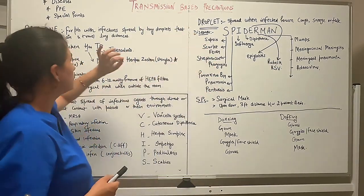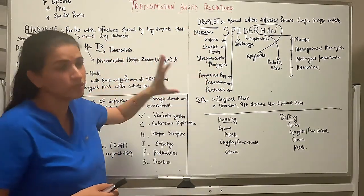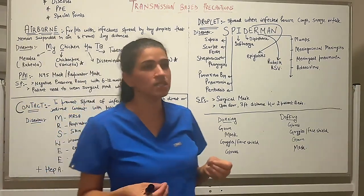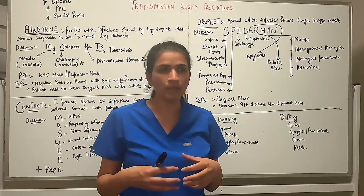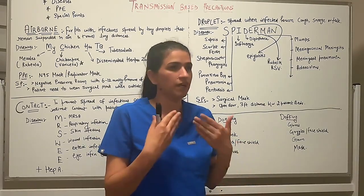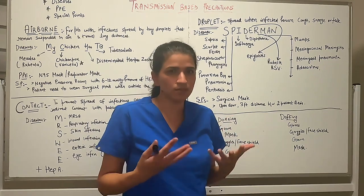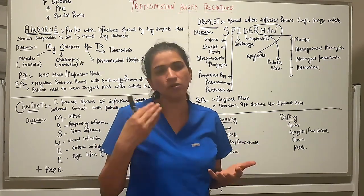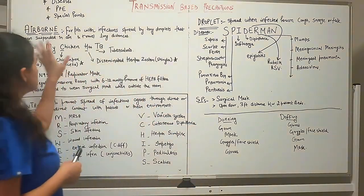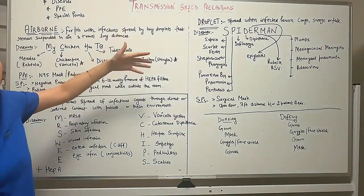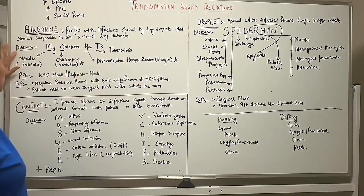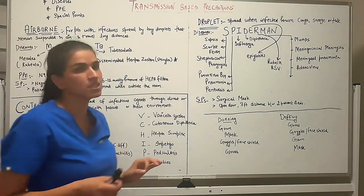The main difference between airborne and droplet transmission is this: with airborne, if you're standing in a room in the same environment as someone infected, even simply inhaling — taking a deep breath — you can get the infection. That is the meaning of airborne and why we need airborne precautions.